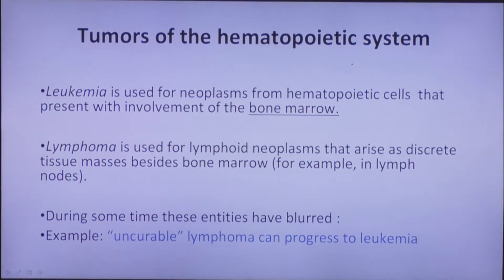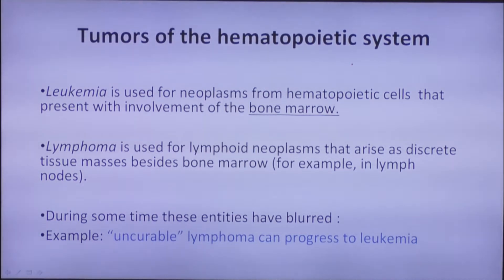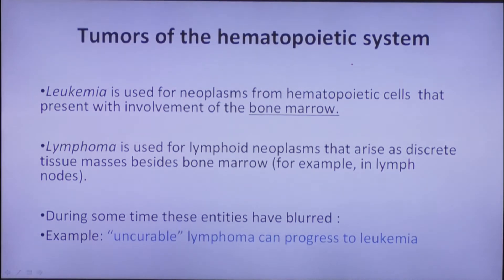Tumors of the hematopoietic system are a special case in terminology. Leukemia is used for neoplasms from hematopoietic cells that present with involvement of the bone marrow. Lymphoma is used for lymphoid neoplasms that arise as discrete tissue masses besides bone marrow — most frequently in lymph nodes, but extra-nodal lymphomas also occur, for example MALT lymphoma in the stomach. During some time, the entities of lymphoma and leukemia have blurred, as we can see lymphoma that progresses to leukemia, and leukemia that presents like lymphoma.